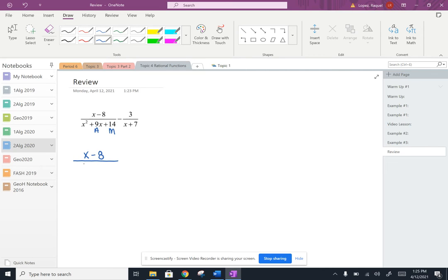So I'm going to copy down that first fraction, and when I factor out the denominator, I'm going to get x plus 7 and x plus 2. So these are my two factors for that denominator. And then I'm going to copy down the second fraction.